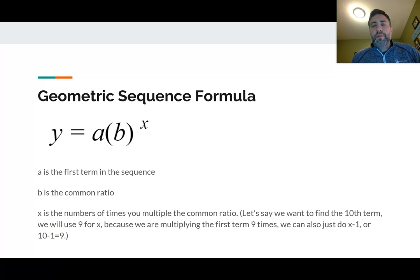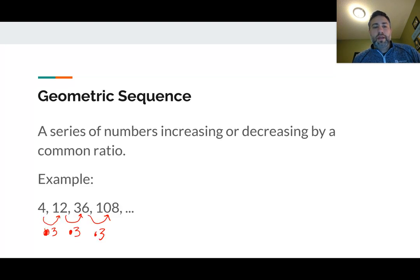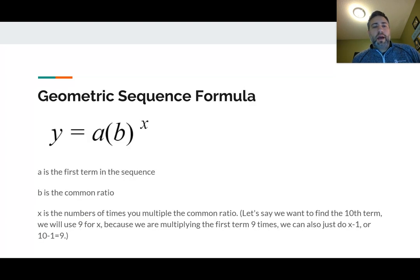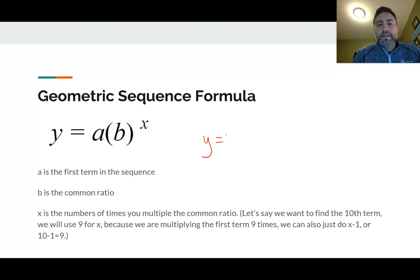Here's the formula for it — I've definitely put this in your notes. Y equals A times B to the X power. The A is the first term in the sequence. The B is going to be the common ratio. So for that last example, the 4 would be your first number and the 3 would be your common ratio. If we were doing that previous one, it would be Y is equal to 4 times 3 to the X power.